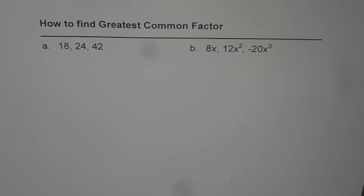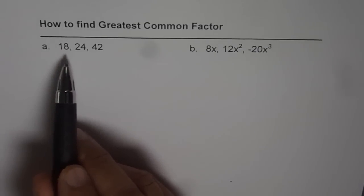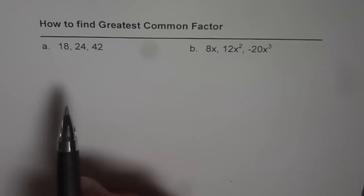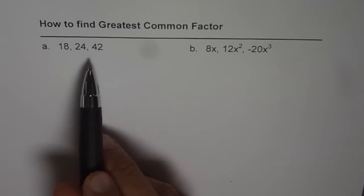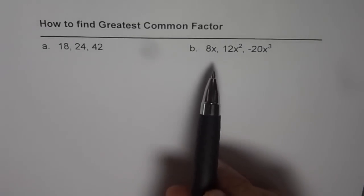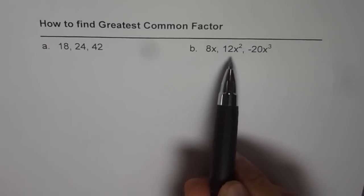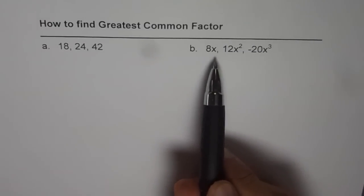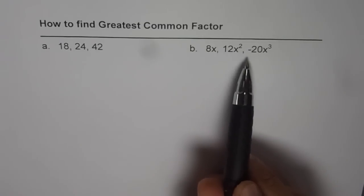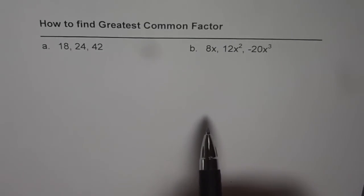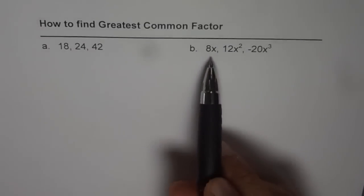I am Anil Kumar and in these set of videos we will understand how to factor polynomials. To start with, let us understand first how to find the greatest common factor. We have two examples here: three numbers which are 18, 24, and 42 — we'll figure out how to find the greatest common factor. Then we have three algebraic terms with variables: 8x, 12x squared, minus 20x cubed, and we will find the greatest common factor amongst these three terms.